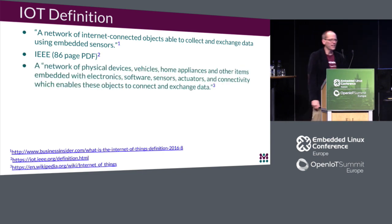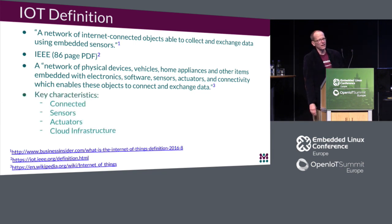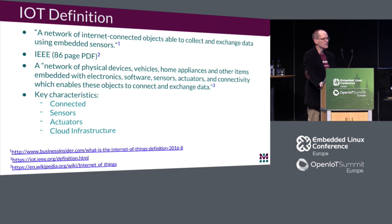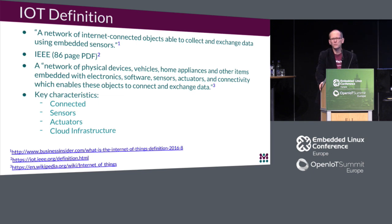I went to Wikipedia, which has a very similar definition: a network of physical devices, vehicles, home appliances, and other items embedded with electronics, software, sensors, actuators, and connectivity, which enables these objects to connect and exchange data. It comes down to a couple of key characteristics. In the Internet of Things space, we're always talking about connected devices. Generally you have some number of sensors able to detect characteristics of their environment, actuators able to affect change, and in a lot of cases, cloud infrastructure involved.